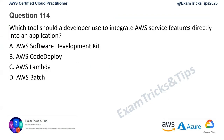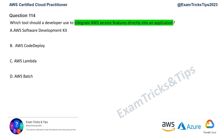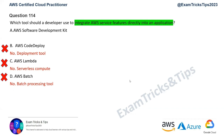Question 114: which tool should a developer use to integrate AWS service features directly into an application? AWS CodeDeploy is a deployment tool, not a development integration tool — eliminated. AWS Lambda is serverless compute — wrong. AWS Batch is a batch processing tool for repetitive jobs — wrong. That leaves Option A, AWS SDK, which provides programmatic access to AWS resources and is used to integrate AWS service features directly into an application.